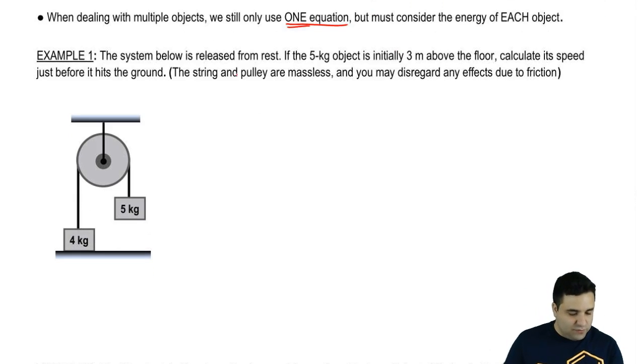Here I have a system is released from rest. So the initial velocity is zero. The five kilogram object, this one right here, is initially three meters above the floor. So this gap here, it's going to be released. It's going to fall. Three meters. Let's call this object A. Let's call this object B.